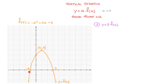Starting with the x-intercept at negative one, whose coordinates are negative one, zero — if I multiply the y-coordinate zero by the scale factor two, it stays zero. So this x-intercept won't be changed by the transformation. Next, looking at the y-intercept at three, its coordinates are zero, three. Multiplying the y-coordinate by two, it turns into six, so the y-intercept of the transformed curve will be six. Moving to the vertex, which has coordinates one, four — multiplying the y-coordinate four by the scale factor two, it turns into eight. So the vertex for the transformed curve will be at coordinates one, eight.